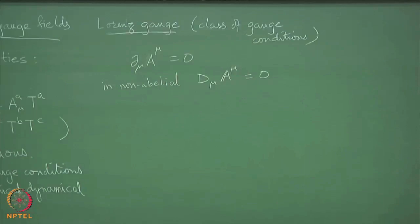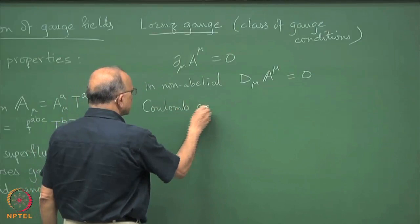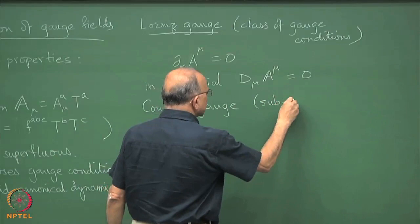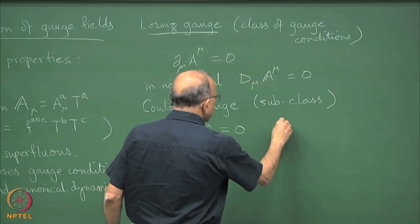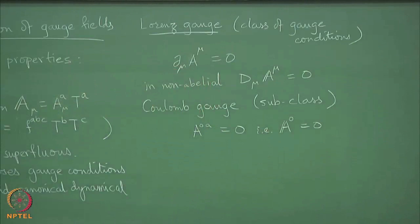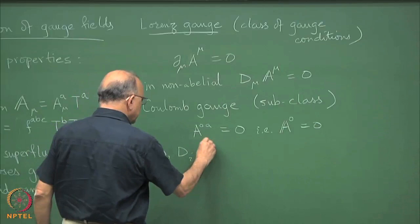This is a covariant gauge, and within it one further puts the restriction that A₀^A are equal to 0. The Coulomb gauge, which is a subclass, further imposes that A₀^A are all equal to 0, equivalently A₀ equal to 0, which leaves behind ∂_iA^i equal to 0.